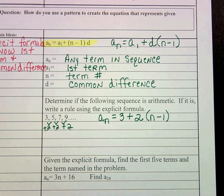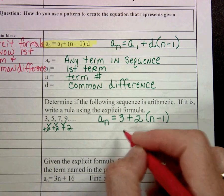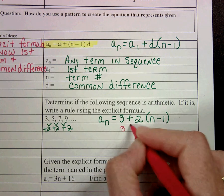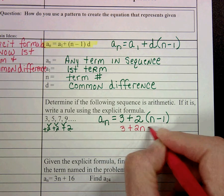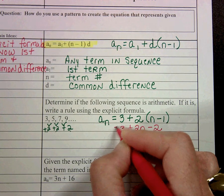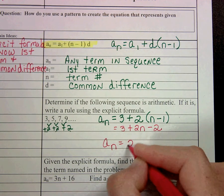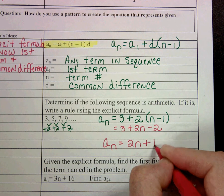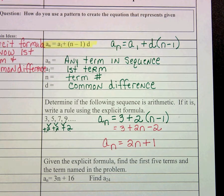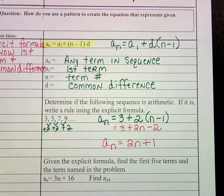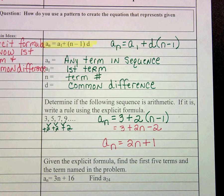Now, what I want to show you is we could take this and make it look more like the recursive rule, and we could distribute the 2, so that we get 2n minus 2, and then combine our like terms, and so we could also see the rule as 2n plus 1. And so this looks more like the recursive rules that we wrote the other day. So the explicit formula can then be turned into a more equivalent formula like that.